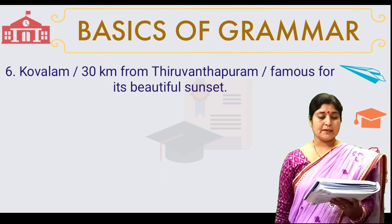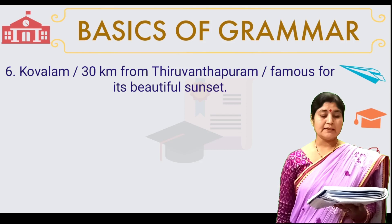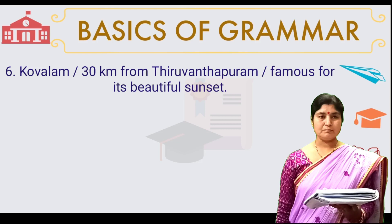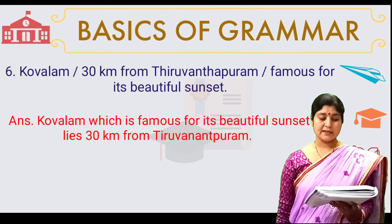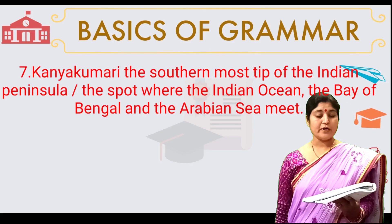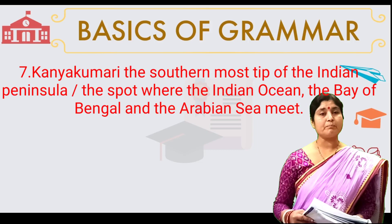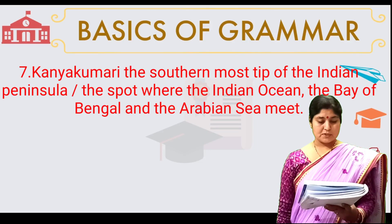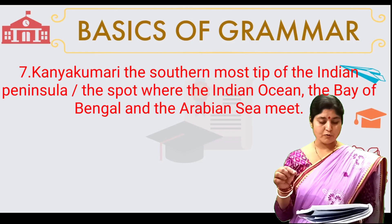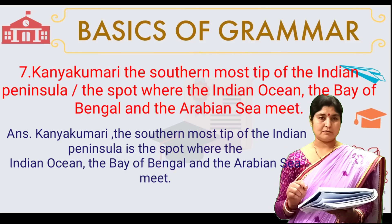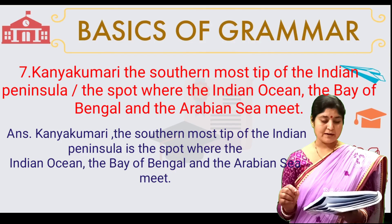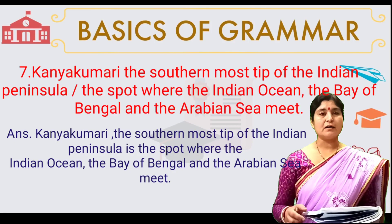Number six: Kovalam, 30 km from Thiruvananthapuram, famous for its beautiful sunset. Answer: Kovalam, which is famous for its beautiful sunset, is 30 km from Thiruvananthapuram. Number seven: Kanyakumari, the southernmost tip of the Indian peninsula, the spot where the Indian Ocean, the Bay of Bengal and the Arabian Sea meet. This is a non-defining clause: Kanyakumari, the southernmost tip of the Indian peninsula, which is the spot where the Indian Ocean, the Bay of Bengal and the Arabian Sea meet.